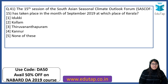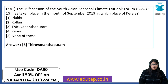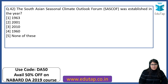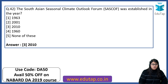The 15th session of the South Asian Seasonal Climate Outlook Forum took place in September 2019 at which place in Kerala? A lot of questions on venue. The answer is Thiruvananthapuram, the capital. The South Asian Seasonal Climate Outlook Forum was established in which year? The right answer is 2010 — not that old, it is recent.